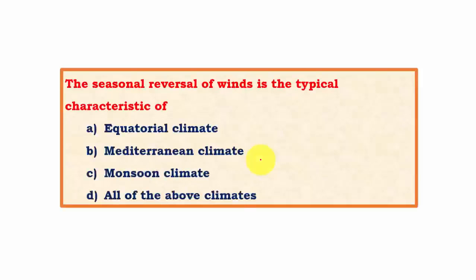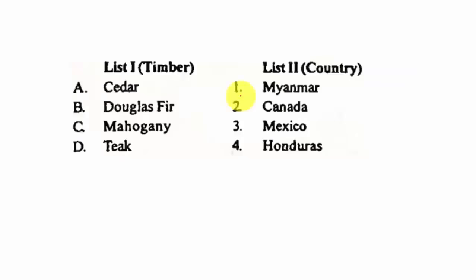The seasonal reversal of winds is the typical characteristic of monsoon type of climatic region. Monsoon type, along with China type, has seasonal reversal of winds during various seasons.